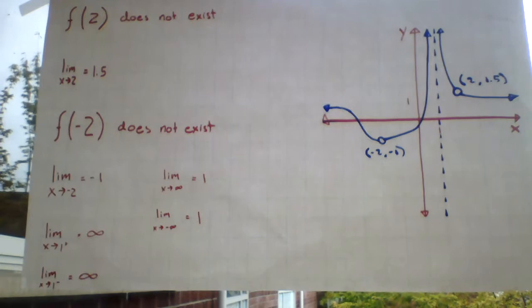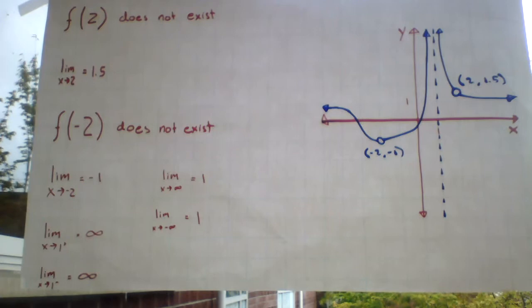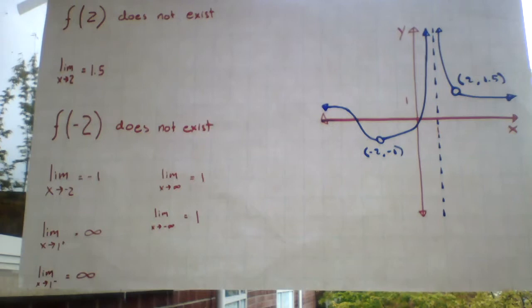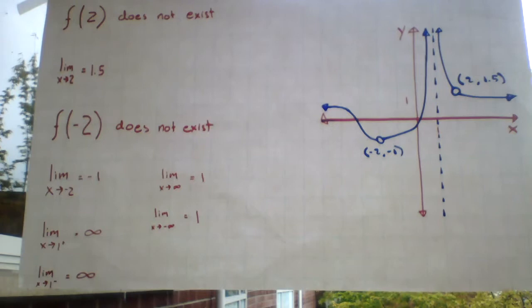You can see the vertical asymptote when x equals 1, that is infinite discontinuity, and as we can see the horizontal slopes, the limit as x approaches infinity equals 1, and the limit as x approaches negative infinity equals 1, both showing that we actually also have a horizontal asymptote.